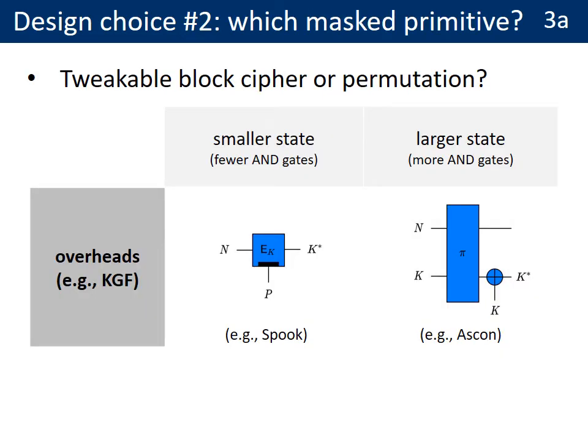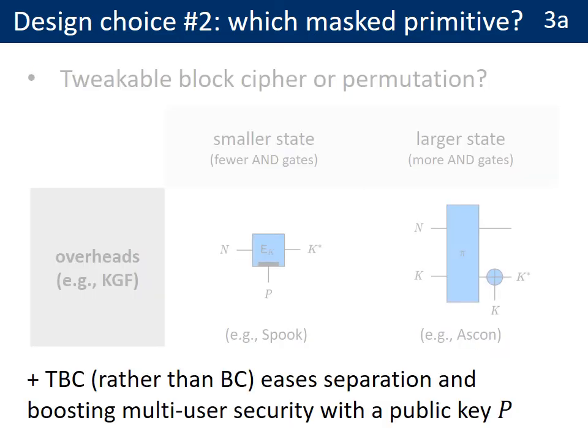Given the choice of a masked primitive, a second design question is to choose between a tweakable block cipher and a permutation. The main reason for choosing a tweakable block cipher is to reduce the size of the state and therefore the number of AND gates, which is important for masking. We selected a tweakable block cipher and not a block cipher because it simplifies the separation in the mode, and it allows boosting multi-user security with a public key. Such a multi-user extension could also be obtained with a permutation, possibly at the cost of an additional call to the permutation if it is not large enough.